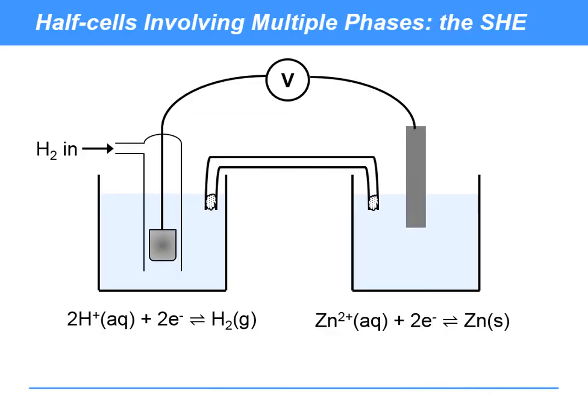So this is now thinking about half-cells involving multiple phases. So this is the standard hydrogen electrode here. This is a piece of zinc undergoing zinc 2+ in there undergoing the following redox equilibrium. What's the cell diagram for this?